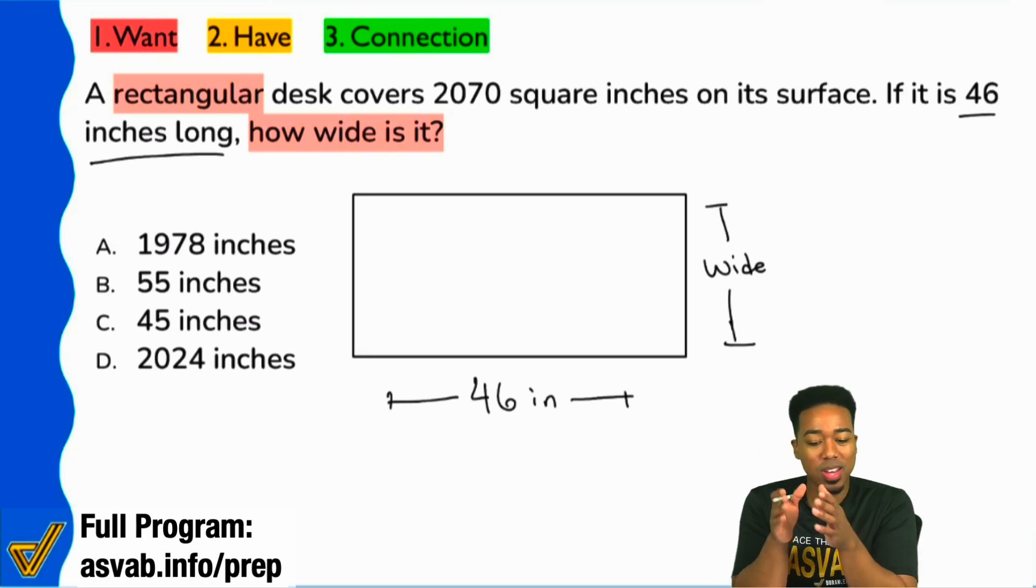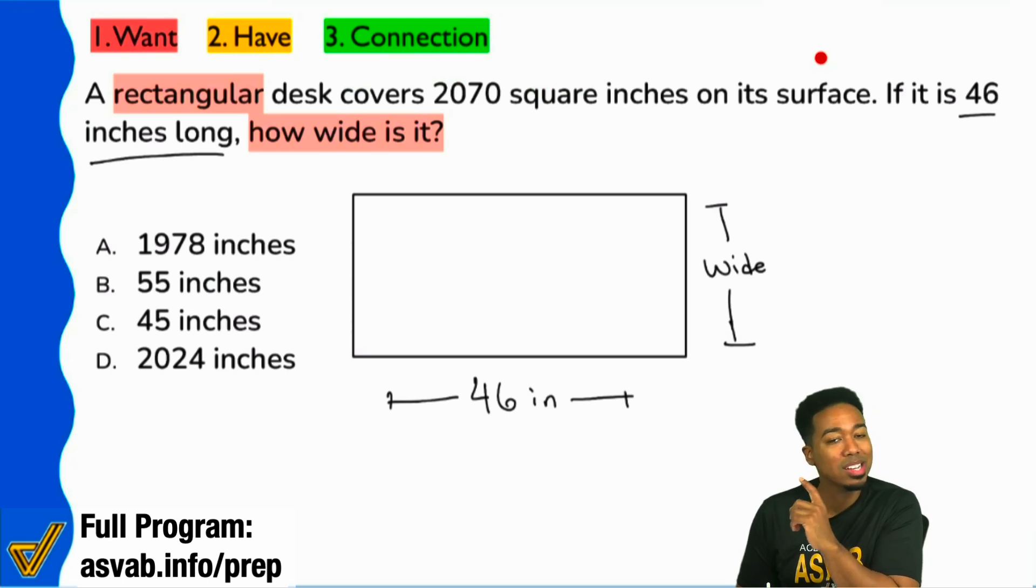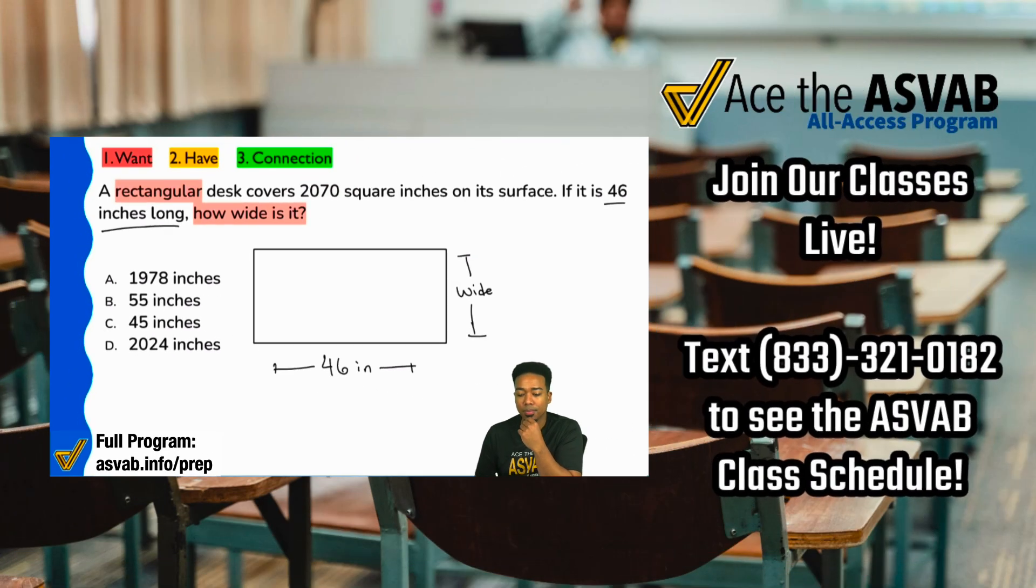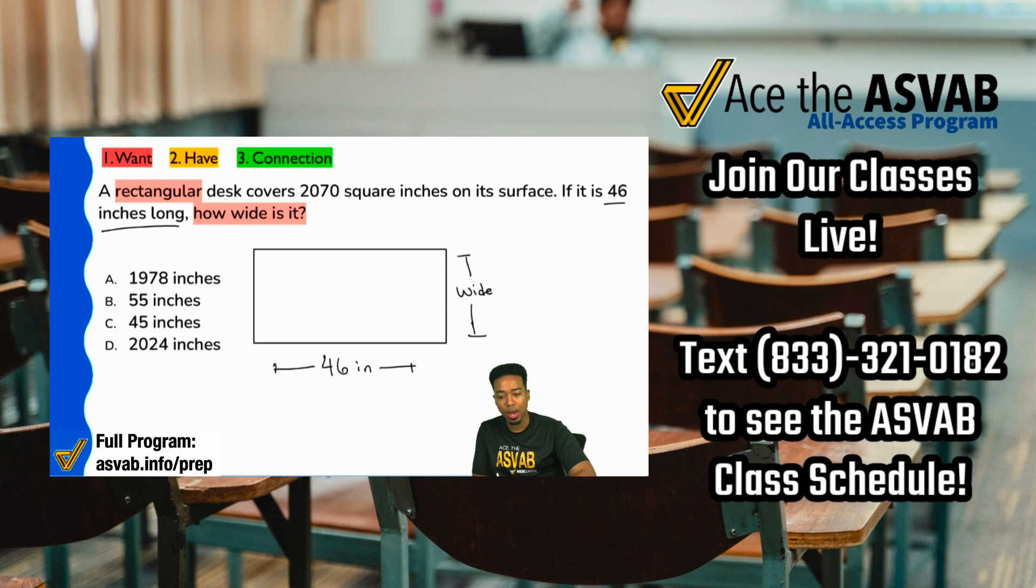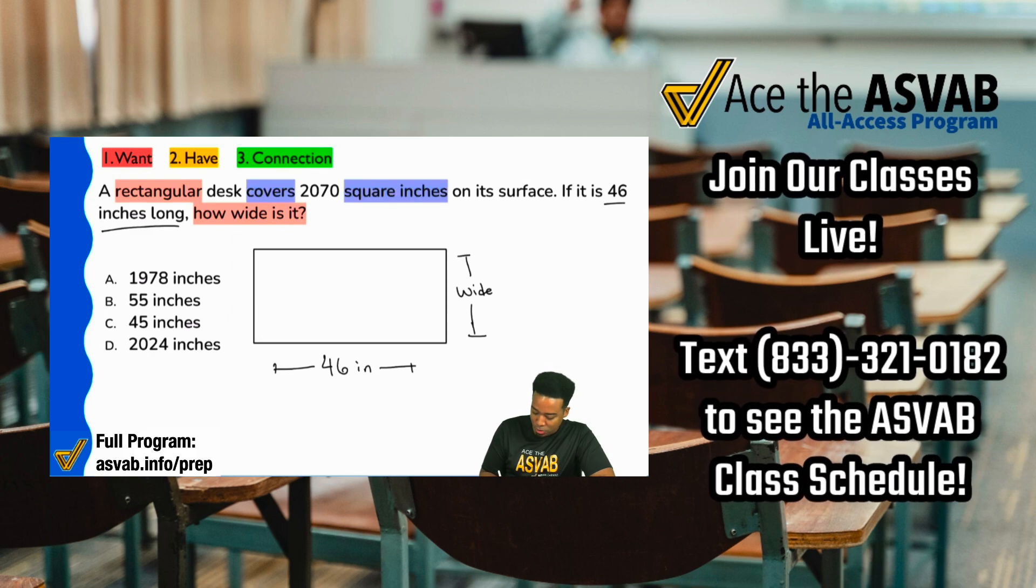So we're here and the only other piece of information that we have is where it says, hey, this rectangular desk covers this many square inches on its surface. My party people, although it doesn't say it outright, the 2070 represents what mathematical idea here? Absolutely. It represents area. It represents area because of the following keywords: covers this many square inches on its surface.